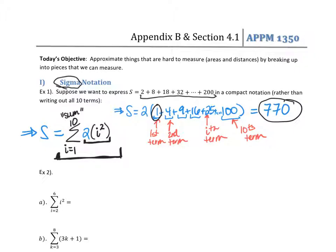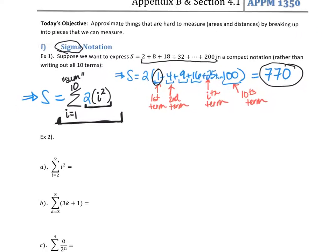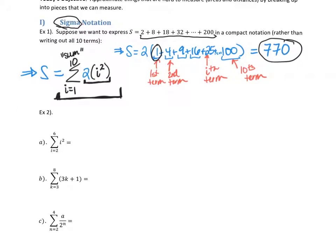Now I want you to look at these three sums. Put this on pause for a second and write out what each one means — what terms you'd be adding up. In the cases where it's possible, also give me the total sum.